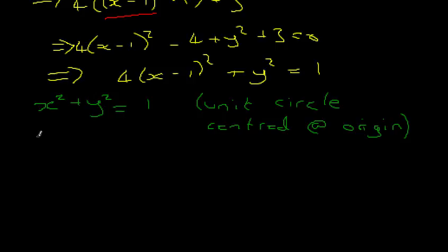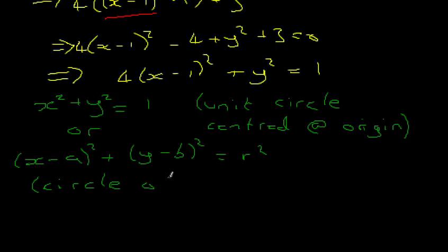Or this is the general form of a circle, which you should be familiar with. x minus a squared plus y minus b squared equals r squared. This is a circle of radius r centered at a comma b, right? x equals a, y equals b.